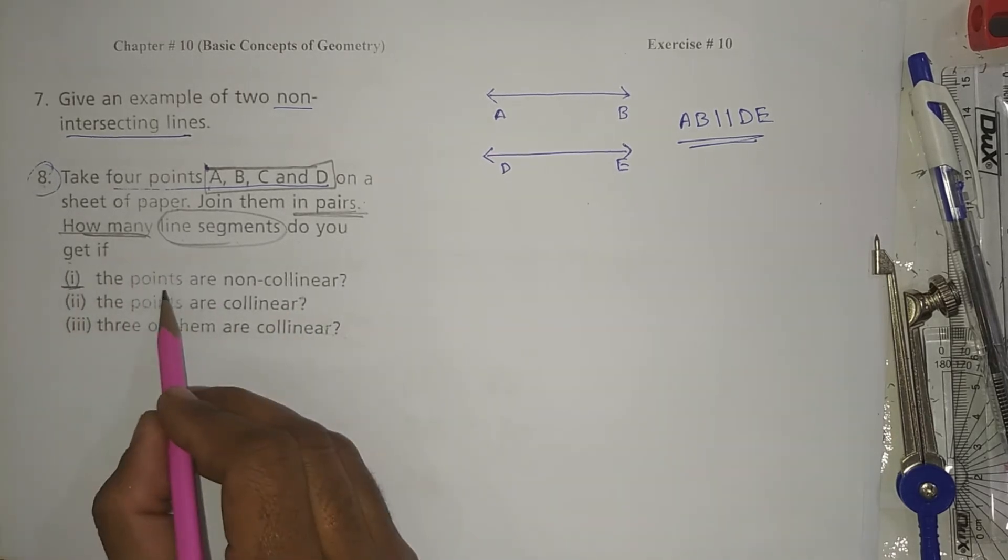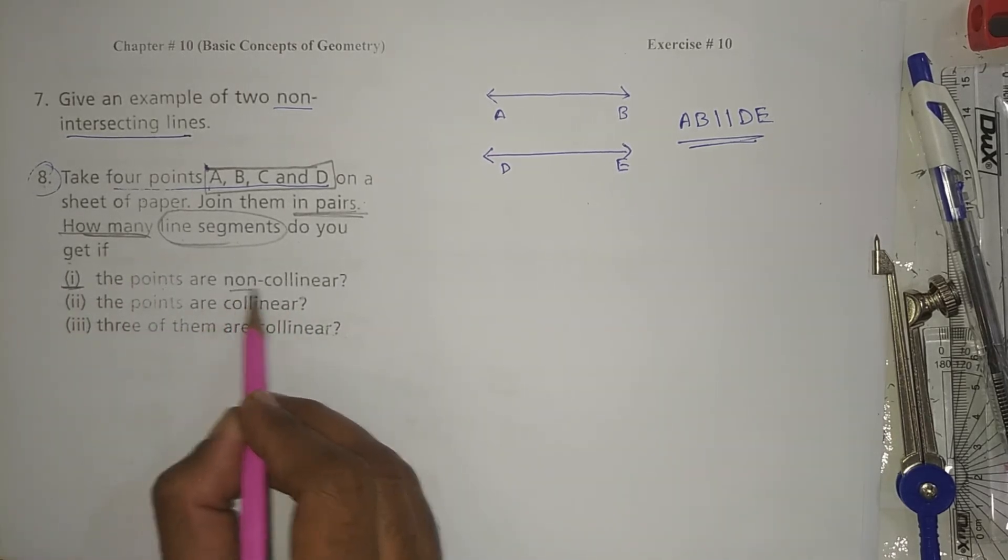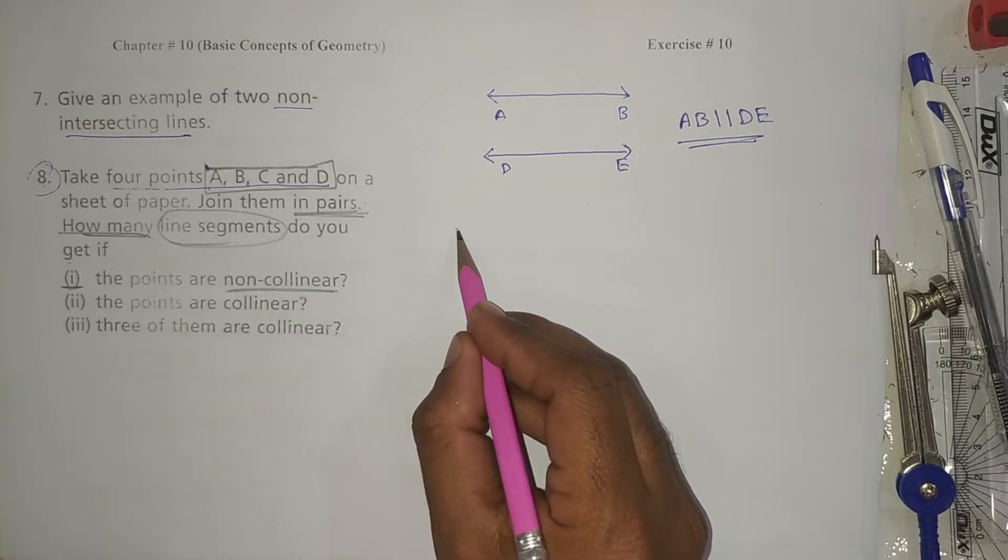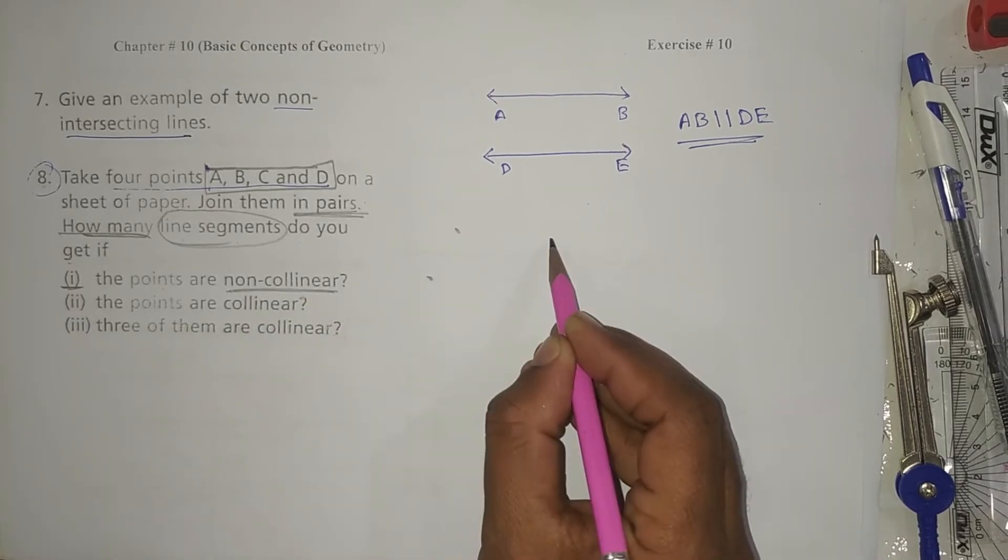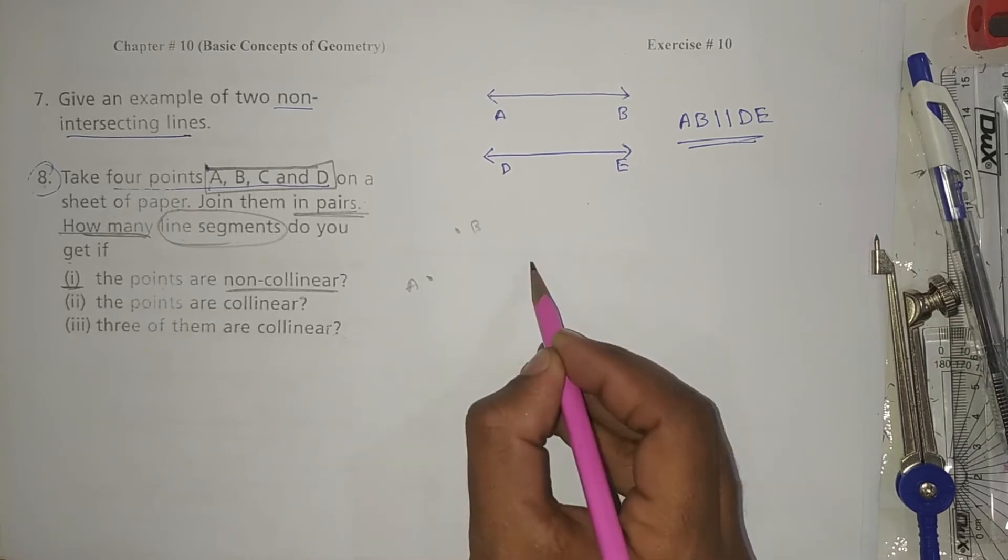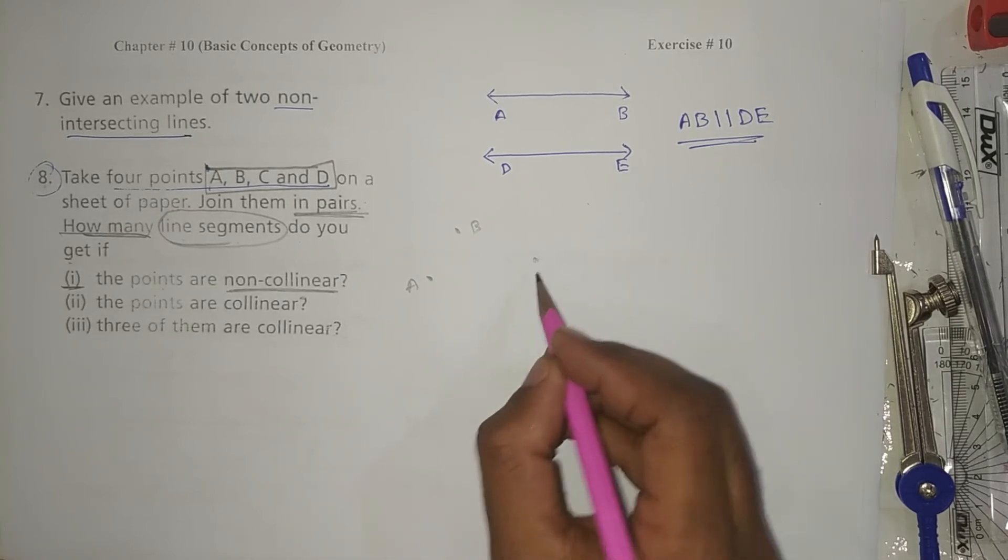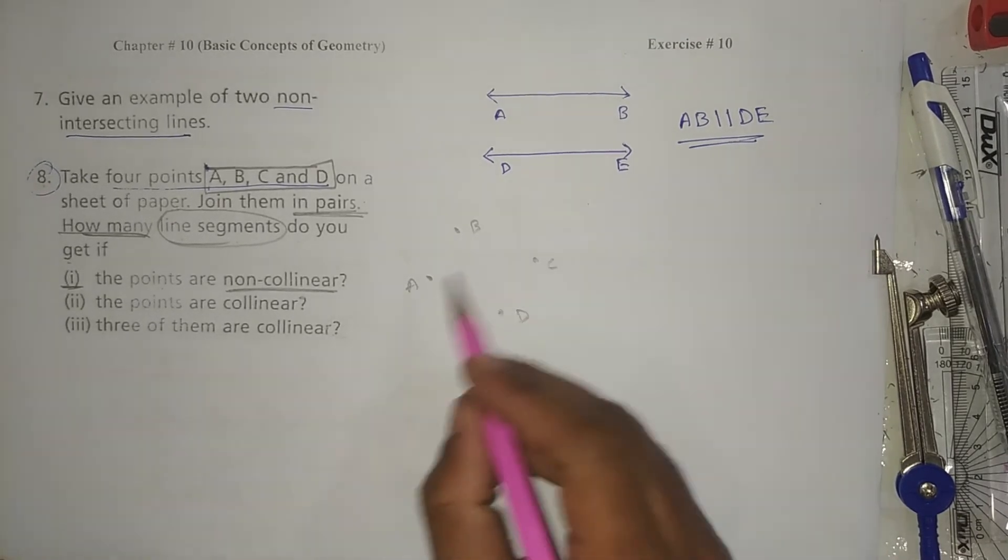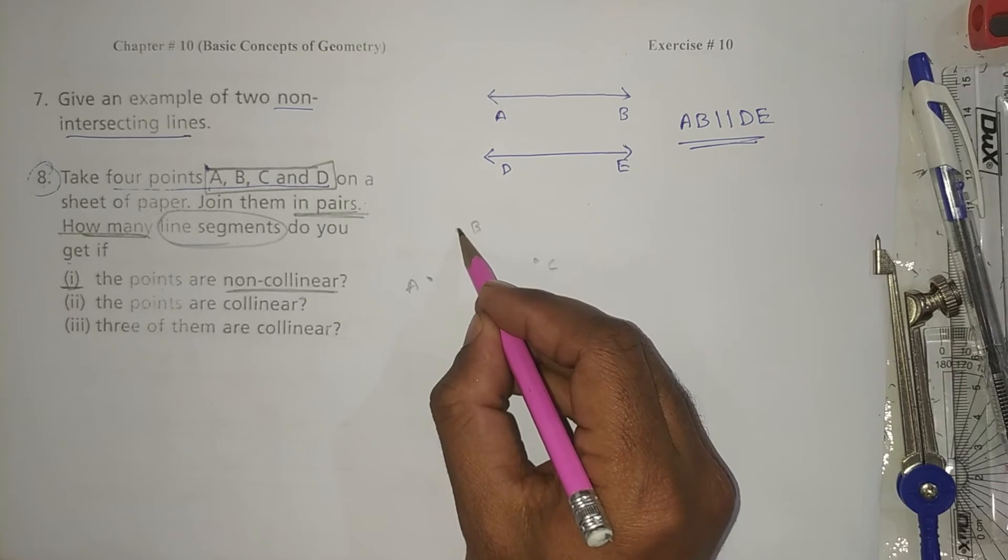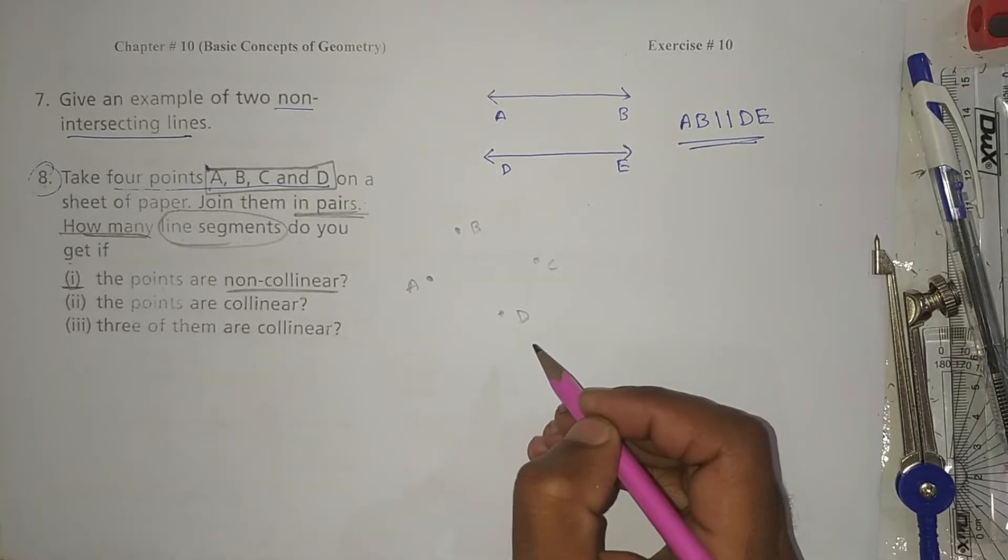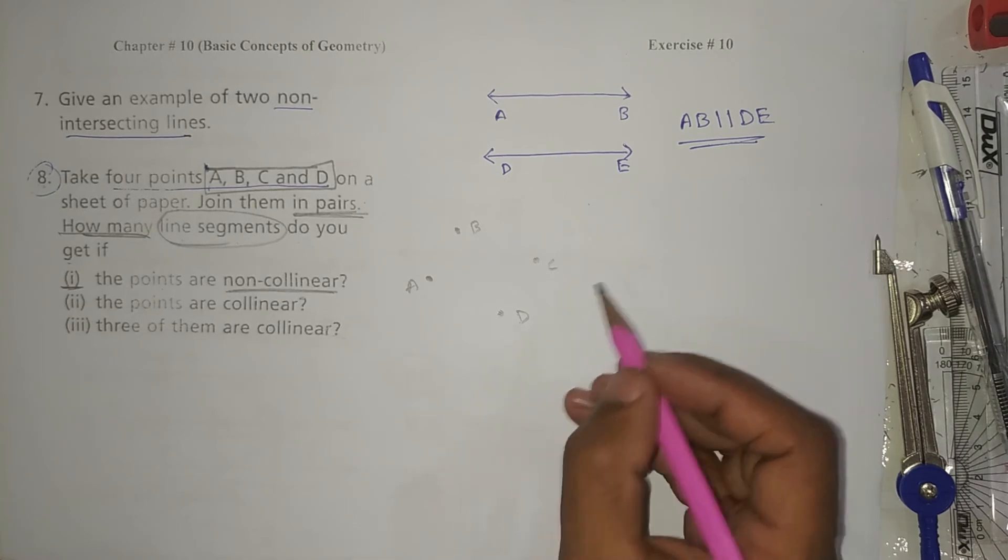Condition first: points are non-collinear. So non-collinear points, I draw points. This is A, B, this is C, and this is D. These are four points and these are not in the same straight line, so these are non-collinear points.